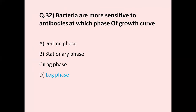Question number 32: Bacteria are more sensitive to antibiotics at which phase of the growth curve? Option A decline phase, option B stationary phase, option C lag phase, option D log phase. The correct answer is log phase, also known as the exponential growth phase. During this phase, bacteria are actively dividing and synthesizing proteins, nucleic acids, and peptidoglycans. The growth curve consists of lag phase, log phase, and stationary phase. The correct answer is log phase.